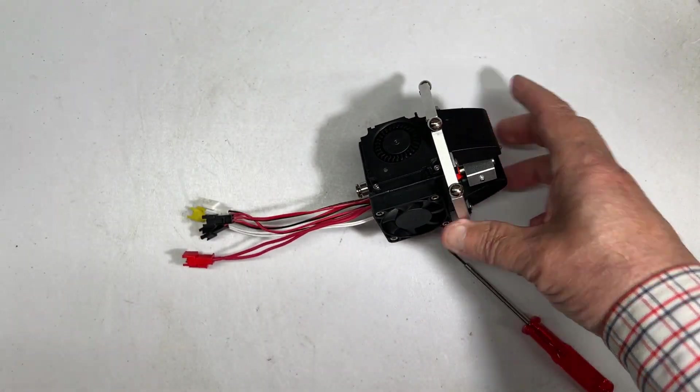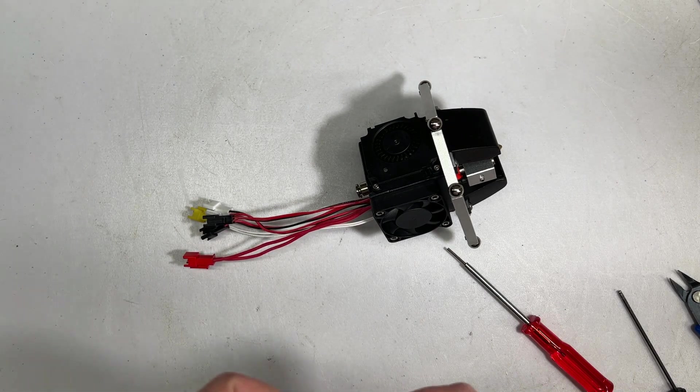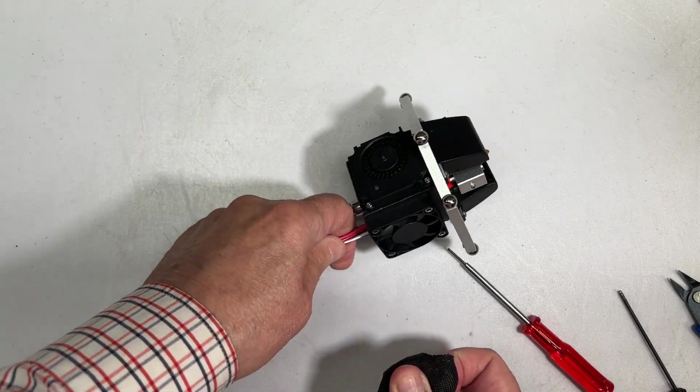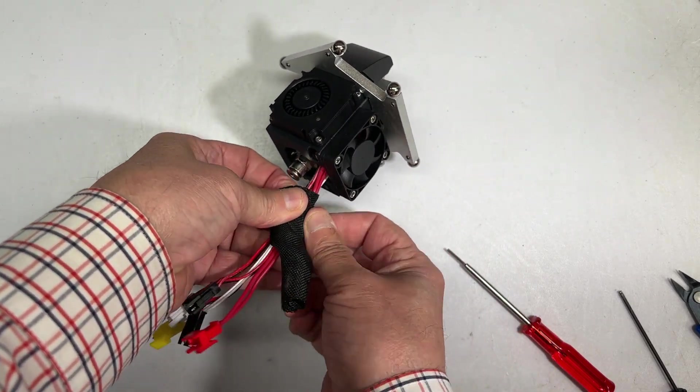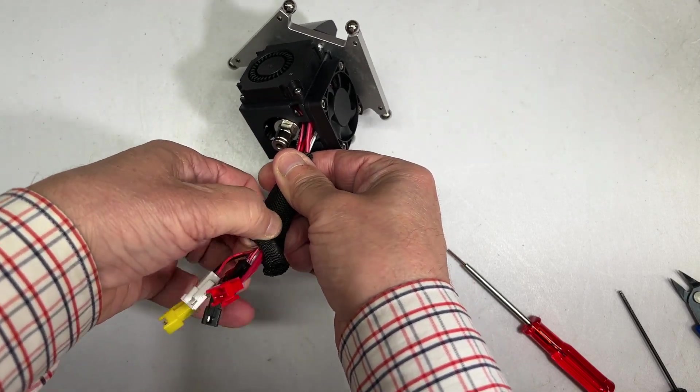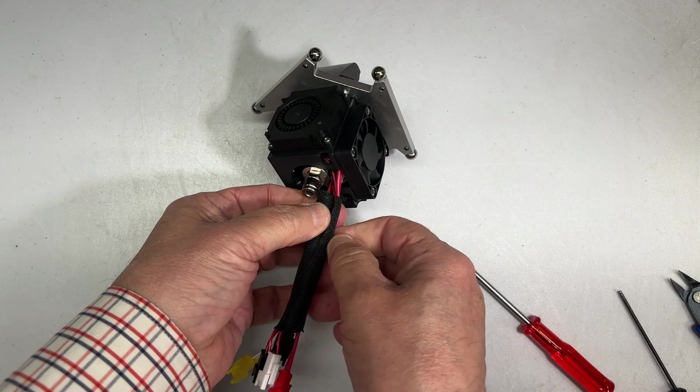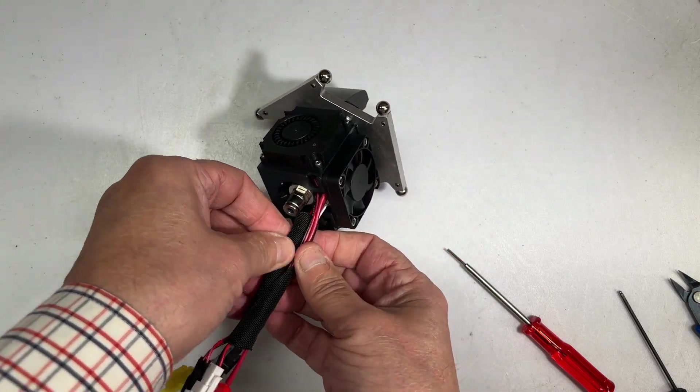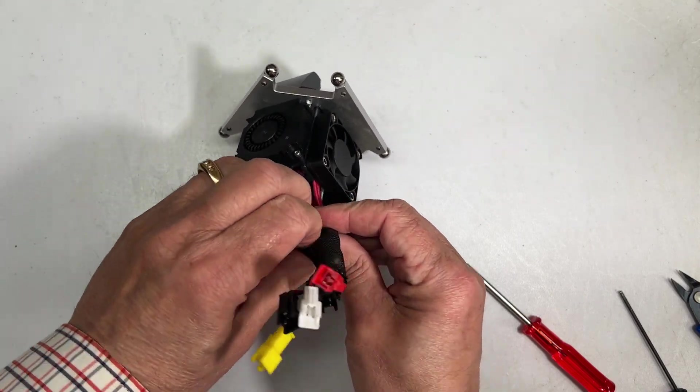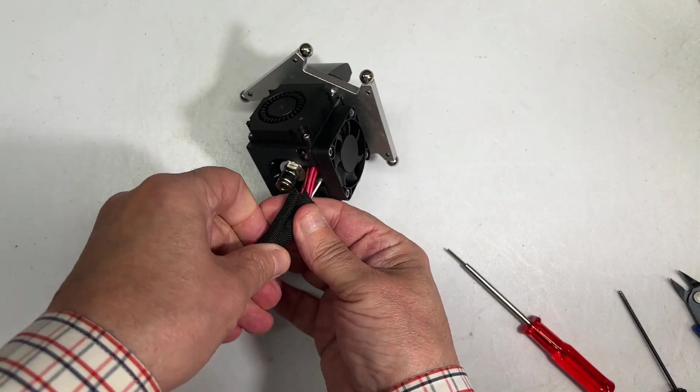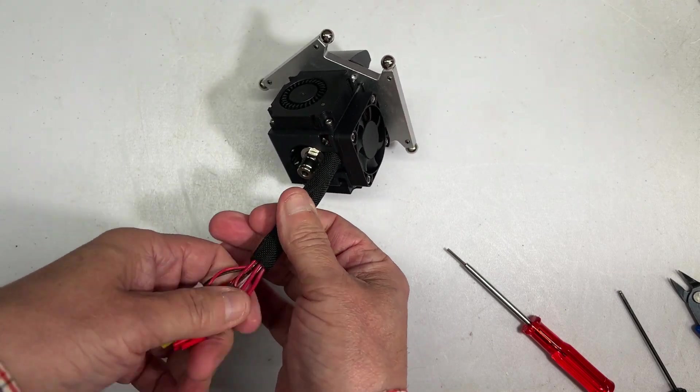So the next thing I'm going to do is put this cover back on. Again, a little bit tricky but you can do it. Put it that way, open it up. Now make sure that the wires are underneath that wrap. Perfect. Look at that.